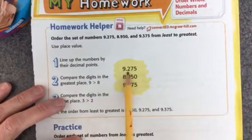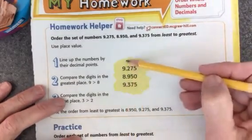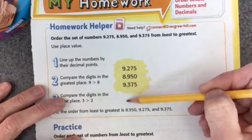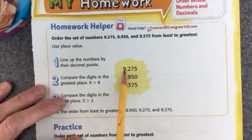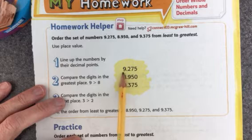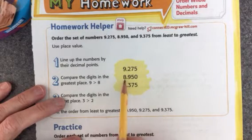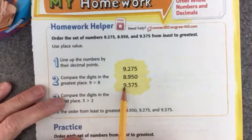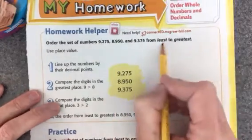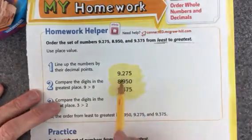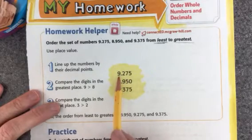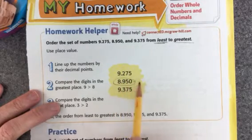So the first thing to do is to put them in a column and make sure the decimals are straight. So then that tells me what the numbers are in each place. So I have a 9 and 8 and a 9 that are all in the ones column. Now I'm going least to greatest and I know that 8 is smaller than 9. So this number will be first.